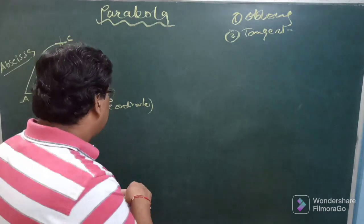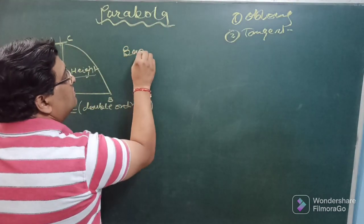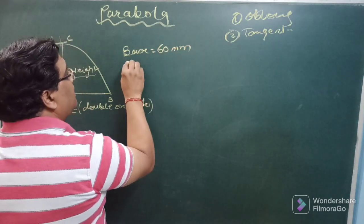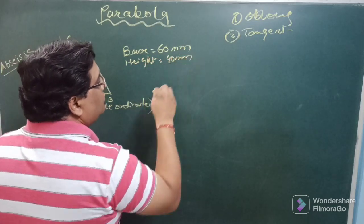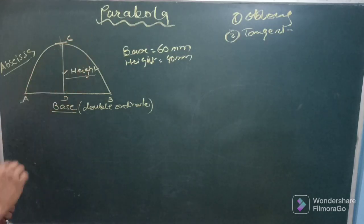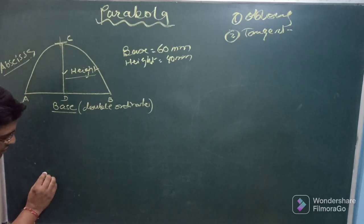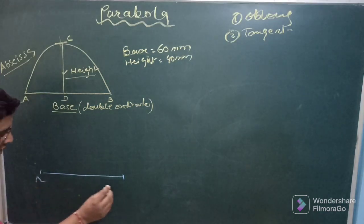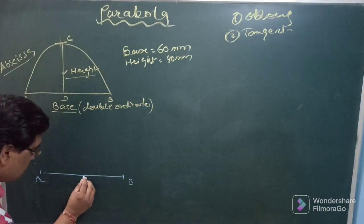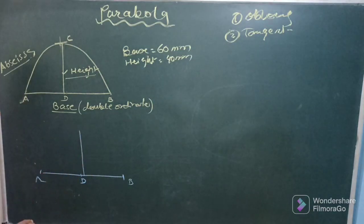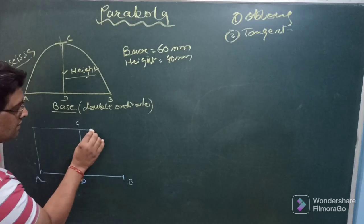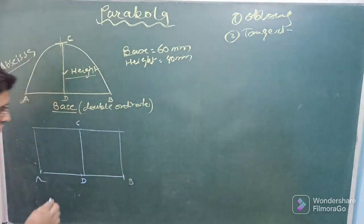So using these data you can draw the parabola. Now let us consider the base of the parabola is given equal to say 60 mm and height is given 40 mm and you wish to draw the parabola. So as per the first method that is oblong method what you need to do just draw base AB equal to 60 mm. Take the midpoint of AB so that you will be getting D. Draw a perpendicular equal to 40 mm so as to obtain C and then complete the rectangle taking ABCD at the extreme points.